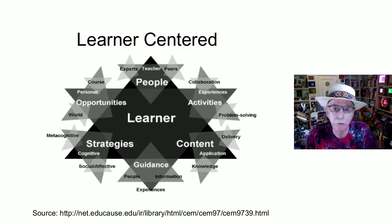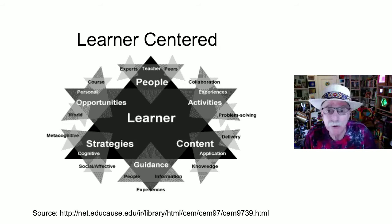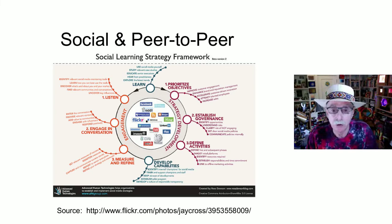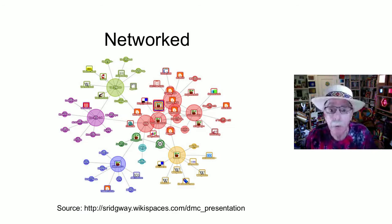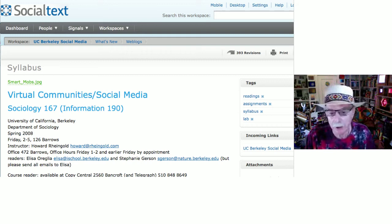The characteristics of the kind of learning they're talking about are that it's learner-centered — and of course most of these you can do without technology — self-directed, social and peer-to-peer, inquiry-based, collaborative and cooperative. I distinguish those by collaborative being working together on projects and cooperative being helping each other learn. And networked. This is what my first classroom looked like at UC Berkeley, and there were some changes in the classroom I'll talk about a little bit later.